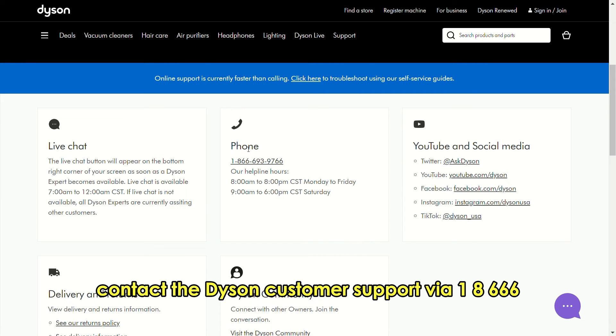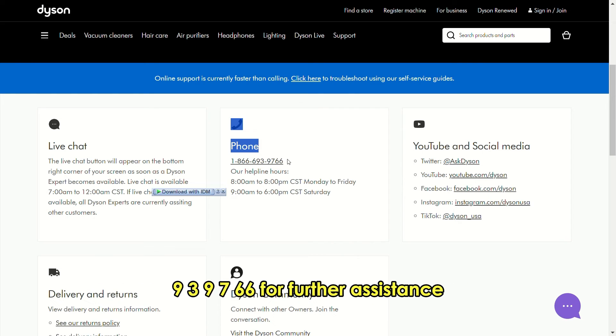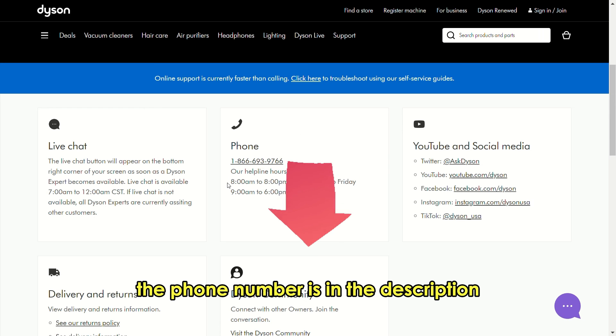Contact Dyson customer support via 1-866-693-9766 for further assistance. The phone number is in the description.